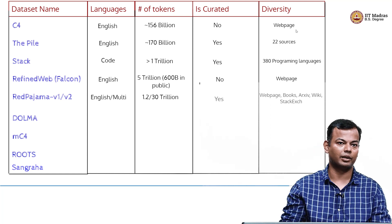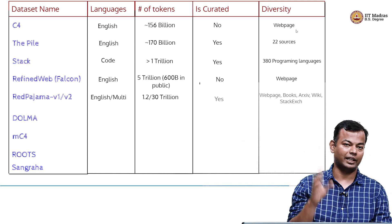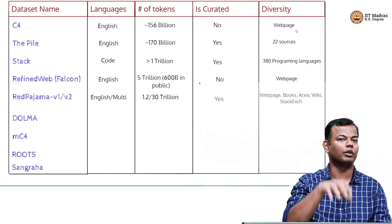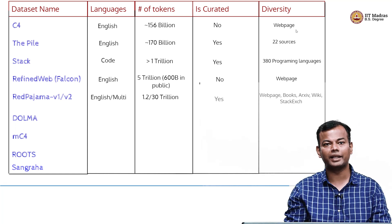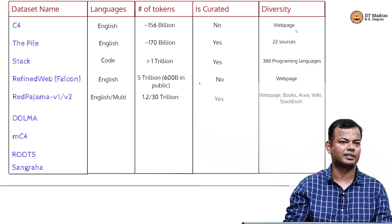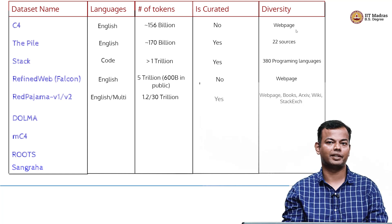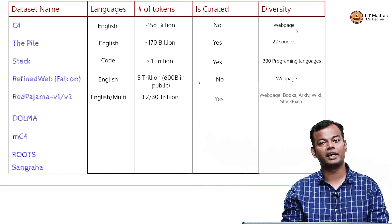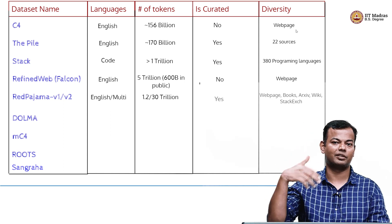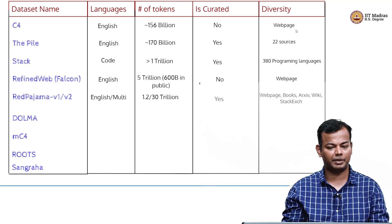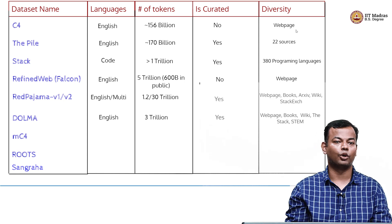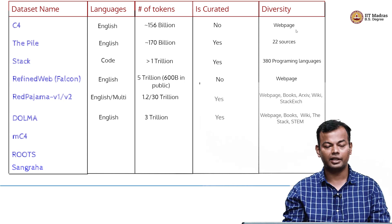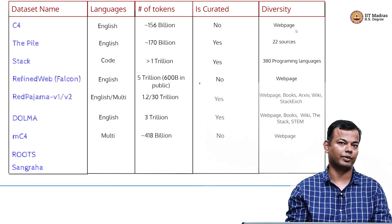RedPajama has multilingual content — English and multilingual. The English part is 1.2 trillion tokens and the entire multilingual part is 30 trillion tokens. However, a lot of this contains duplicate data, so there is a SlimPajama version which has cleaned up and removed some of the duplicates. It is quite diverse, containing web pages, books, content from arXiv, Wikipedia, and Stack Exchange conversation threads. Dolma is again English only with 3 trillion tokens and good diversity in sources. mC4 is a multilingual version of C4 and contains only web pages.